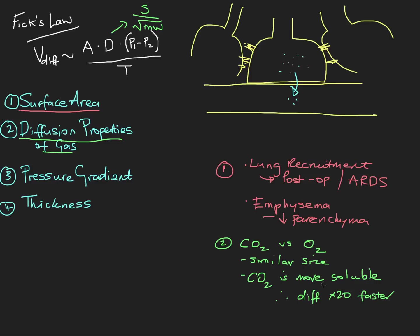That's just an example of how the diffusion properties of the gases themselves influence the overall volume of diffused gas. Yes, there are structural components to diffusion in terms of surface area and how thick the barrier is, but you also have to consider the gases themselves. CO2 diffuses much quicker than oxygen simply because it's more soluble — that's a property of its diffusion characteristics. That's where this diffusion constant comes in: it's basically a way of factoring in what type of gas is diffusing across the lung.